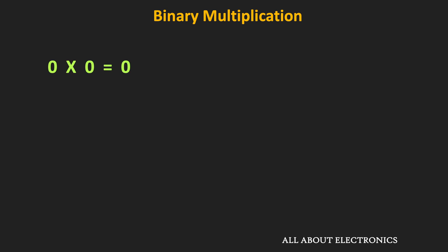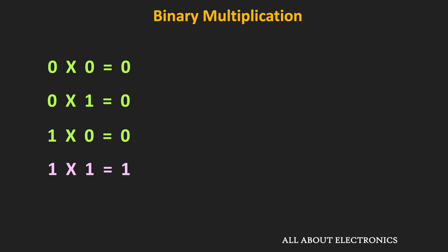When we multiply any number with 0, the output will be 0. That means 0×0 = 0. Similarly, 0×1 and 1×0 will also be equal to 0. And likewise, 1×1 = 1. So using these rules of binary multiplication, we can easily multiply two binary numbers.